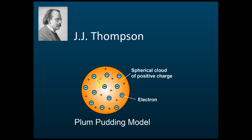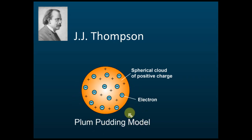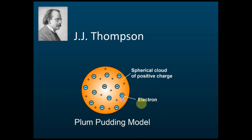JJ Thomson's model looks like chocolate chip cookies, also called the plum pudding model. The biscuit represents the spherical cloud of positive charge, and the chocolate chips represent the electrons uniformly distributed within it. A spherical cloud of positive charge with electrons uniformly distributed — that is JJ Thomson's model.